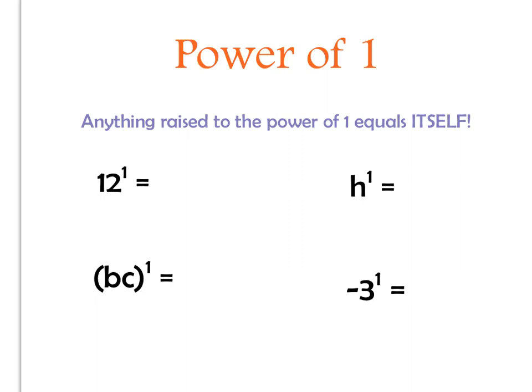Because if you think about it, like if I'm looking at this first example, if I take 12 to the power of 1, all it's saying is that I'm taking 1 twelve. So I get 12 for the answer. Same thing when I have h — I have 1h being multiplied, which would just give me an h.